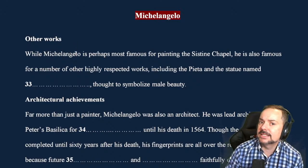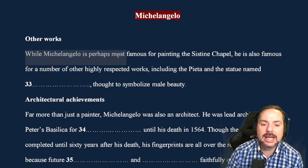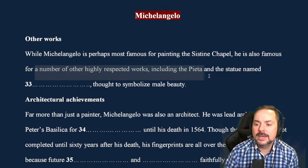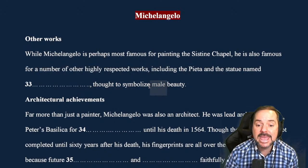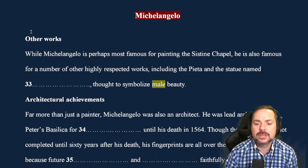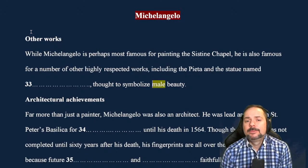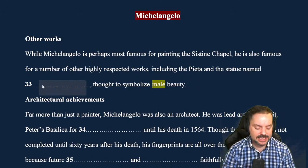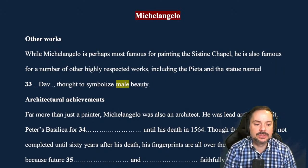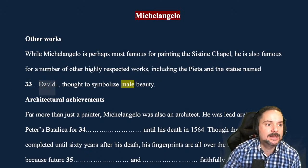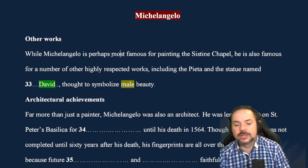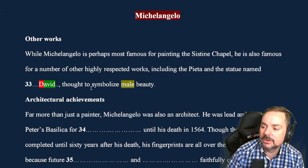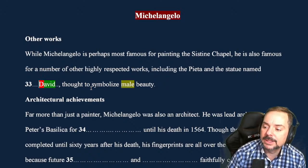Moving into the Michelangelo section: while he's most famous for the Sistine Chapel, he's also known for the Pietà and the statue named something thought to symbolize male beauty. The statue of Mary is mentioned, but Mary is not male, so we're looking for the other statue — the statue of David, which you saw in the thumbnail for this class. The answer is David with a capital D. If you used a lowercase 'd,' you got it wrong. Do not write 'statue of David' — just write David.